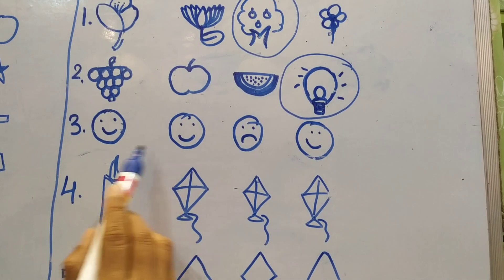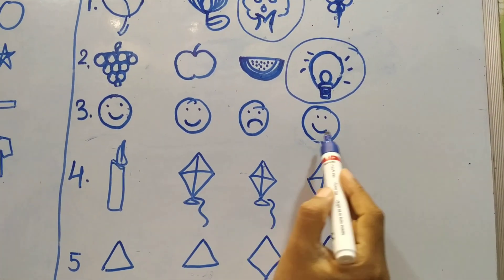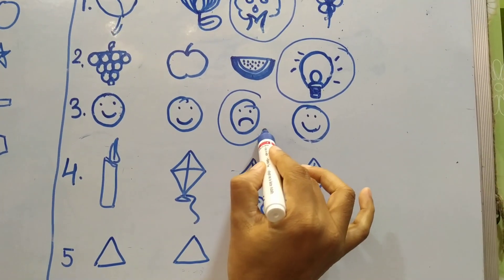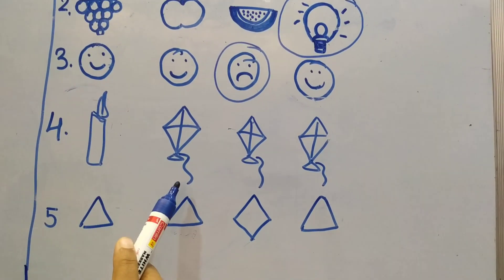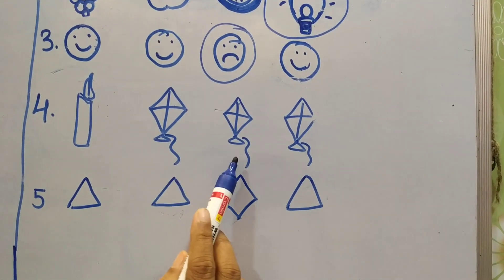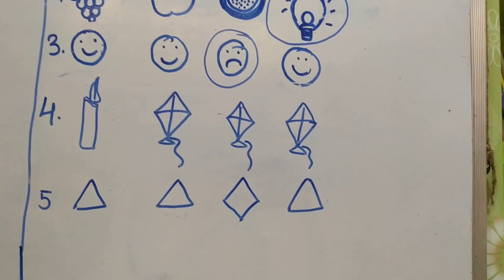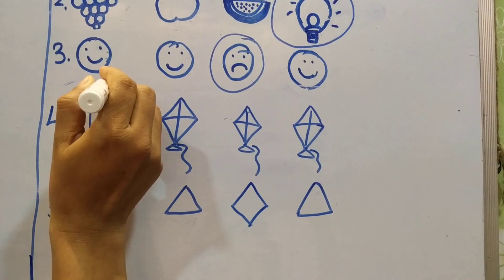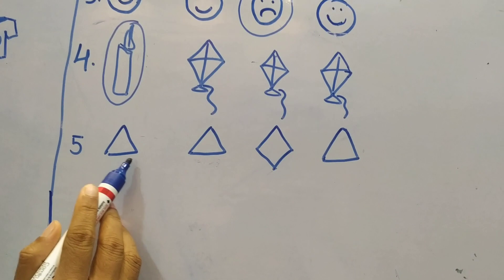Now look at these emojis. Can you see the faces? Smiling — but this one is not smiling. This is also smiling. So the non-smiling face becomes the odd one. Now look at picture number four. We have got one candle, kite, another kite, and one more kite. So which one is different? The candle is different.